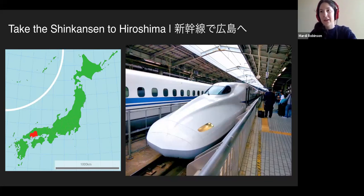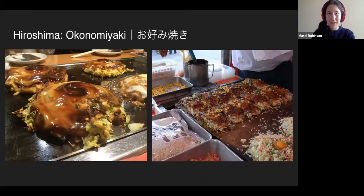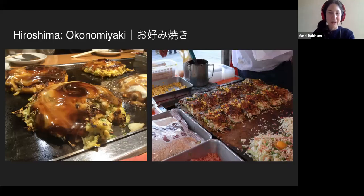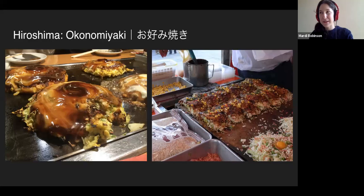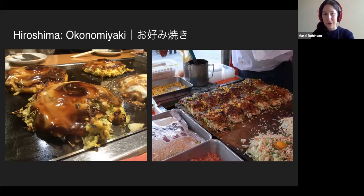Hiroshima is most famous for the atomic bomb, but let's talk about some other aspects of the city first. Going off the food theme from Osaka, there's the cabbage pancake called Okonomiyaki — it literally means 'as you like it.' Japan once had a competition to see which prefecture made the best Okonomiyaki in the country. Osaka was very confident that theirs was the best, but Hiroshima beat them.